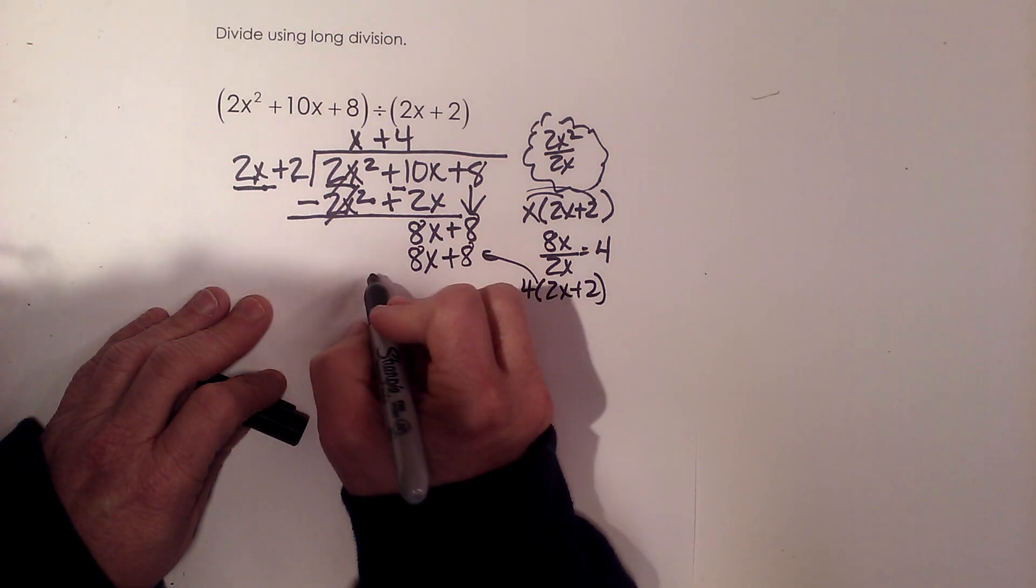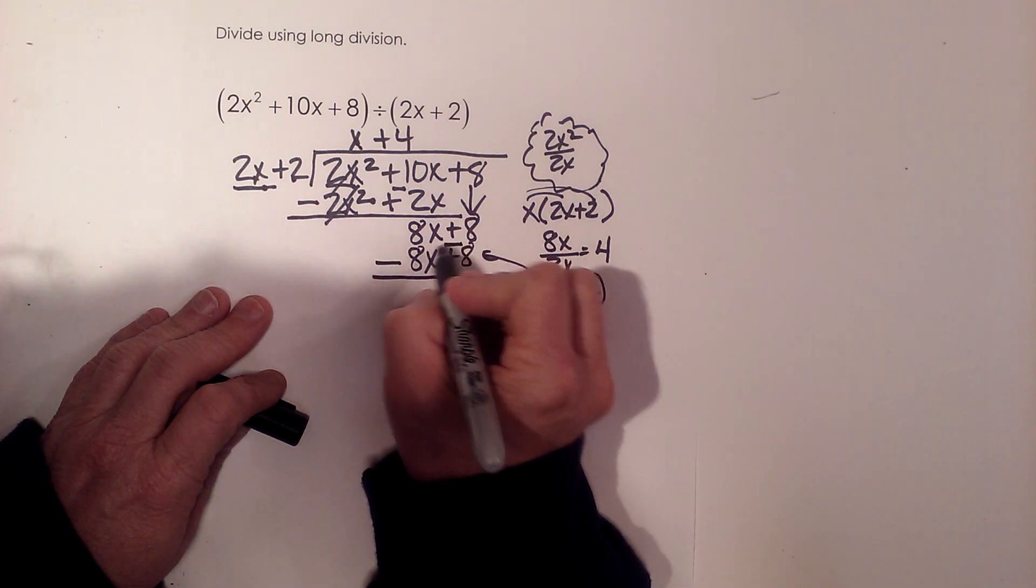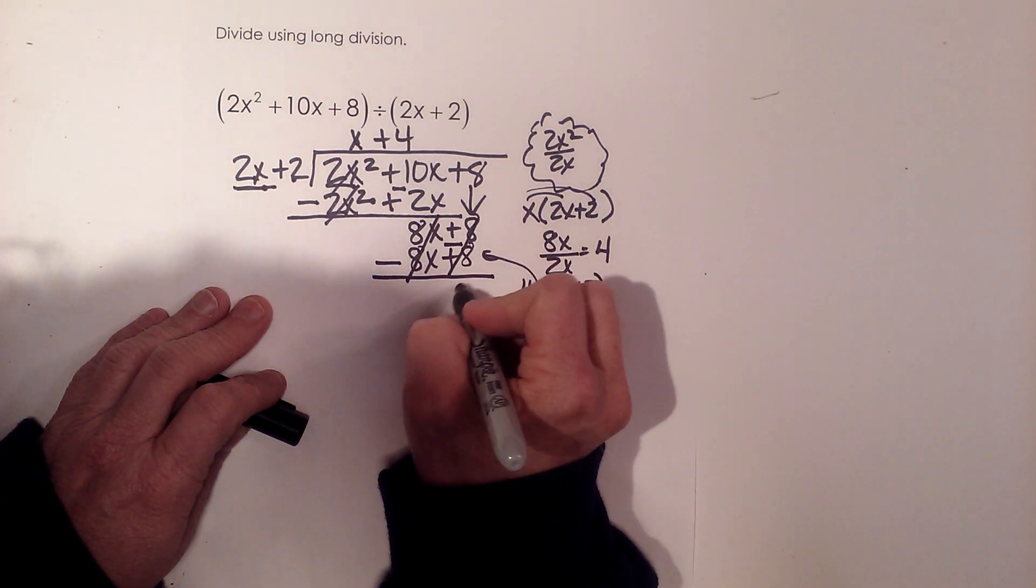And again, I'm going to draw the line to subtract, but instead of subtracting, I'm going to draw the line, change the signs, and add. When we add, we get 0.